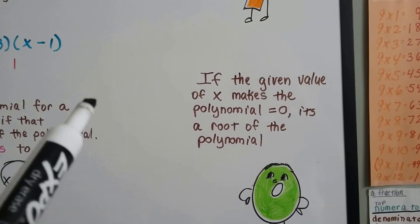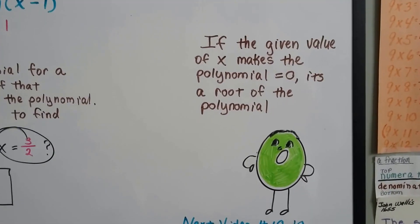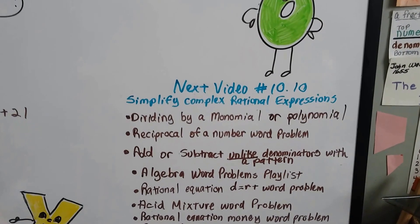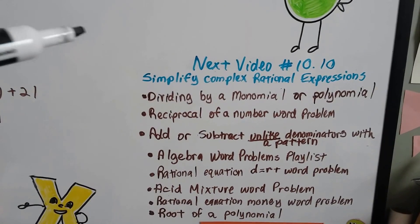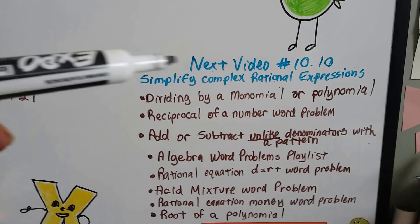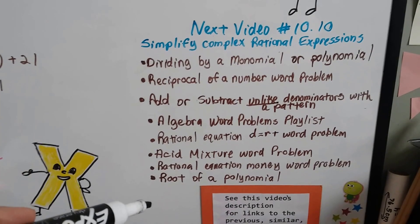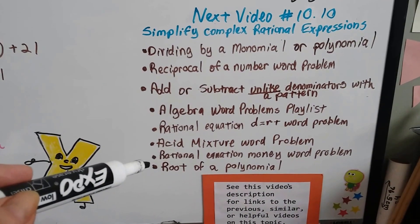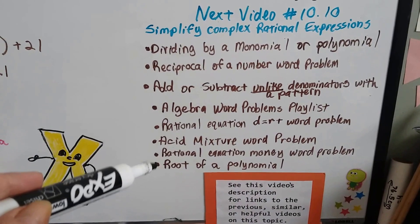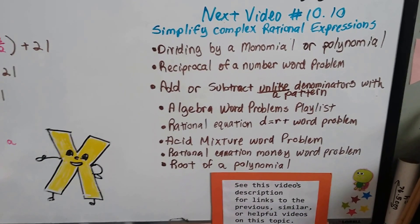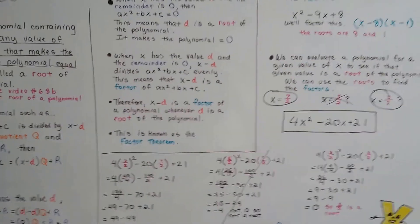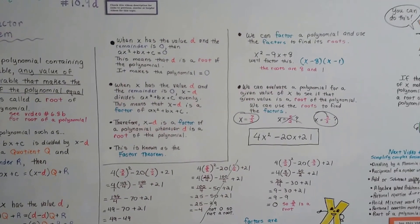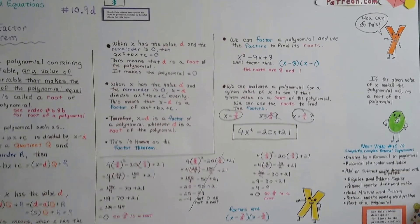So remember, if the given value of x makes the polynomial equal 0, it's the root of the polynomial. Our next video, 10.10, we're going to talk about how to simplify complex rational expressions. Complex rational expressions are like having a fraction in a fraction. If you want to have a link to any of the previous videos that we covered, or my algebra word problem playlist, all those links are going to be in here, including the root of the polynomial video, 6.8, that we covered a while back. You can just click on them and watch them real quick. Okay, that's the factor theorem. Let's talk about simplifying complex rational expressions next. Bye.